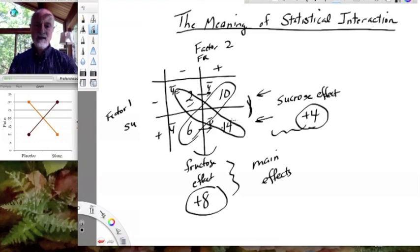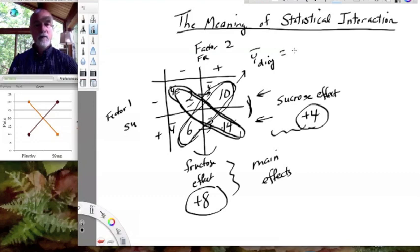Now, what that means is that these diagonals actually add up to exactly the same value. In other words, if I take the sum of these, or if I want the mean, okay, the y bar for this diagonal is, what, 8, and the y bar for this diagonal is, what, 8, right? 14 plus 2 divided by 2.